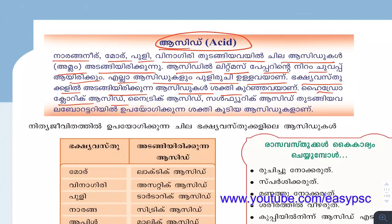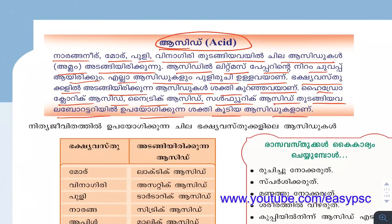Hydrochloric acid, nitric acid, sulfuric acid — these acid levels are created in the laboratory. Acid will be taken over the litmus paper. These are the acids found in the laboratory.